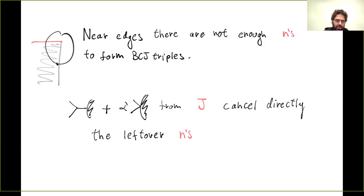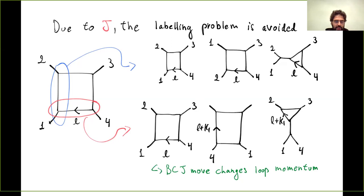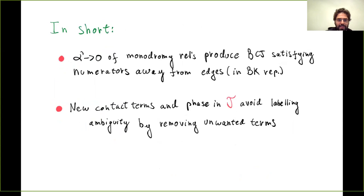At the boundary of the moduli space where the labeling problem arises — BCJ moves would change the definition of loop momenta creating an ambiguity — the J terms generate new trees and contact terms that cancel completely the troublesome graphs. So string theory avoids this problem by canceling those terms out. In summary: taking the field theory limit of the monodromy relations in the Bern-Carrasco-Johansson representation gives BCJ-satisfying numerators away from the edges, and the field theory limit of J gives new terms that cancel the troublesome boundary graphs.